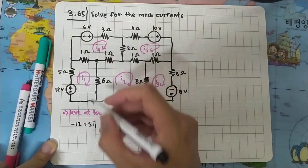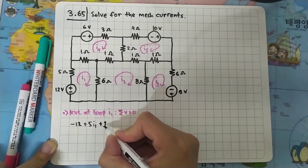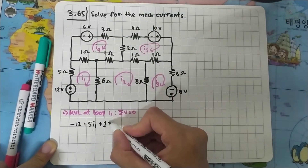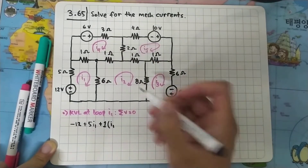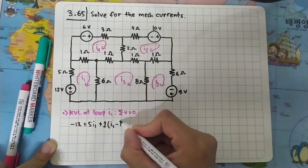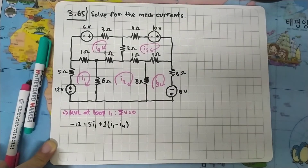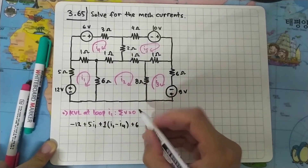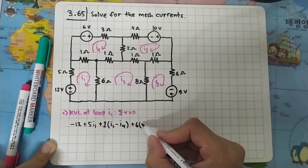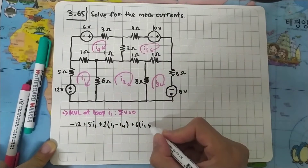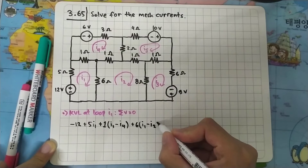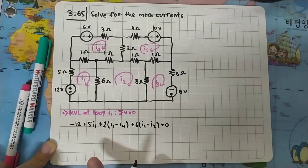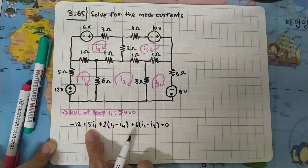Moving on to the 1 ohm resistor, we have two currents passing through: I1 and I4. We focus on I1 first, and since I4 is flowing in the opposite direction, we subtract I4 from I1. Then for the 6 ohm resistor, we multiply by I1, but I2 is flowing in the opposite direction, so minus I2. This equals zero.